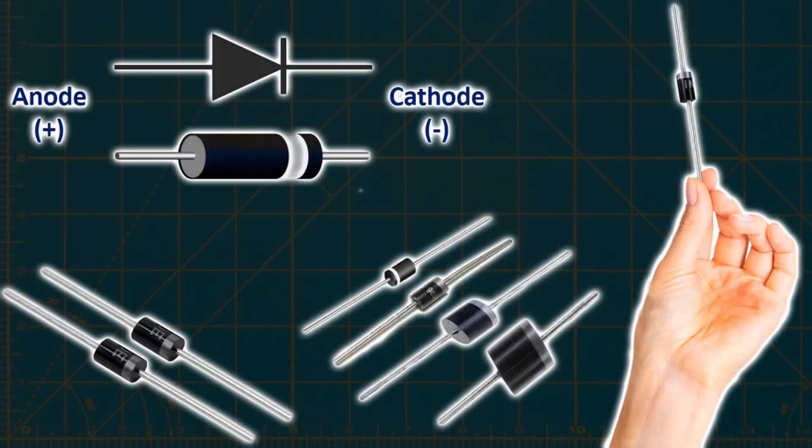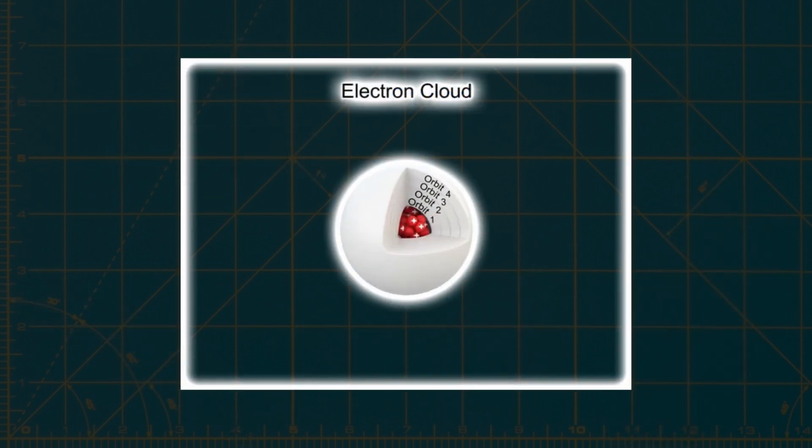In this video, we will explore in detail the structure and working principle of the diode, which is the most fundamental circuit element in electronics. Before we delve into the structure of the diode, let's first explore the electron configuration of atoms.